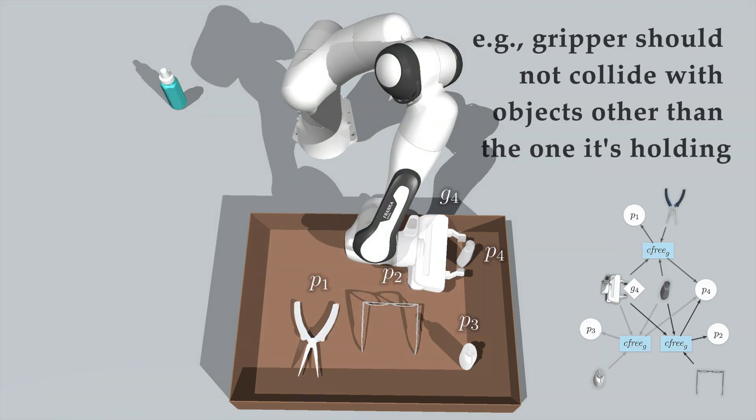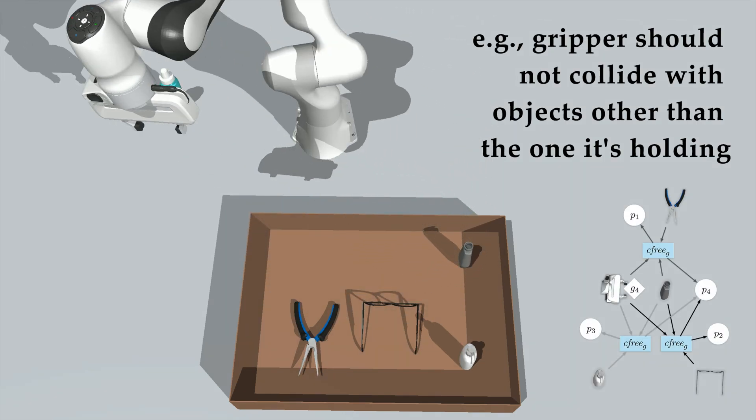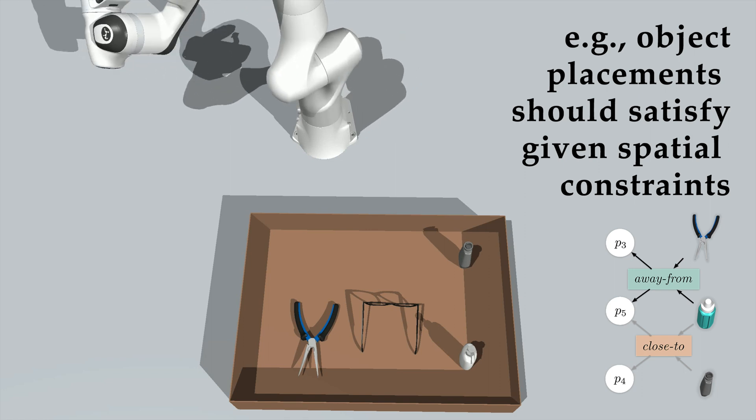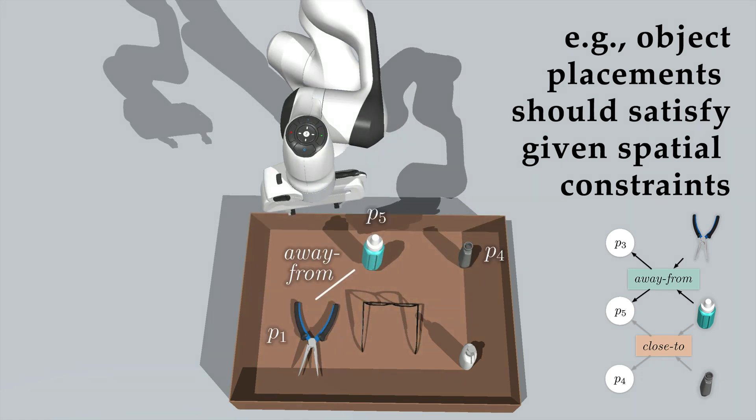The robot gripper shouldn't collide with objects other than the one it's holding. The object placements should satisfy given spatial constraints, for example, away from and close to.